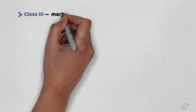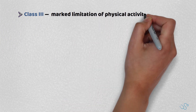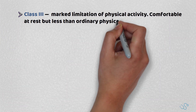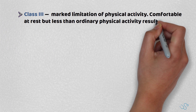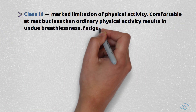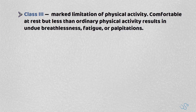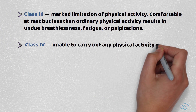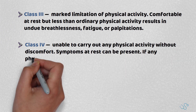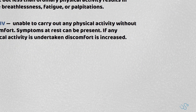Class 3 is when there's a marked limitation of physical activity. Again, they're comfortable at rest, but less than ordinary physical activity results in undue breathlessness, fatigue or palpitations. In Class 4, these patients are unable to carry out any physical activity without discomfort. Symptoms are often present at rest.